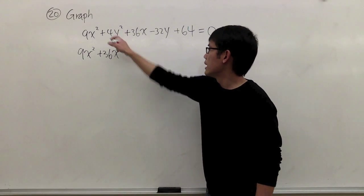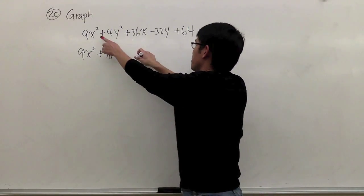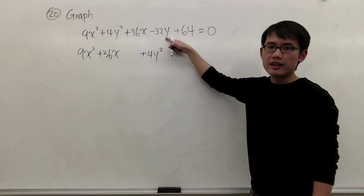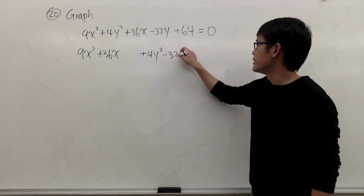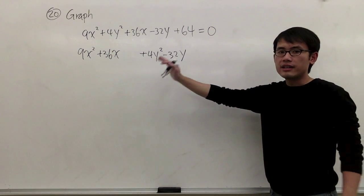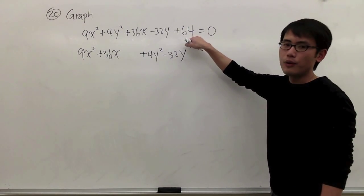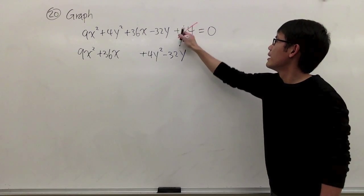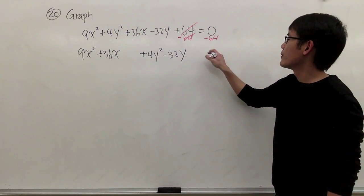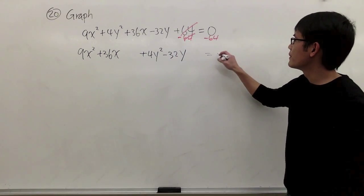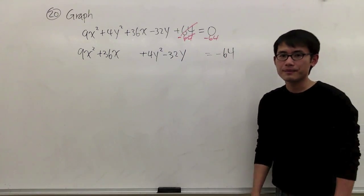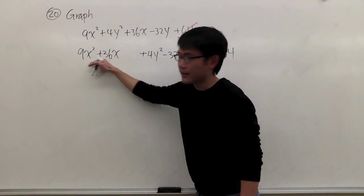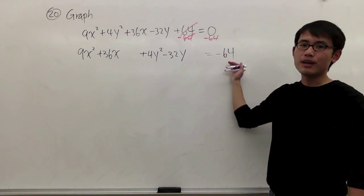Then I will also put the y terms together. I have plus 4y squared, and that goes with the minus 32y. I put the x's together and the y's together. The 64 is just a number by itself — I will kick the 64 to the other side by subtracting 64 on both sides, so that side will equal negative 64. That should be the first step — the x's are together, the y's are together, and we have a number on the right-hand side.